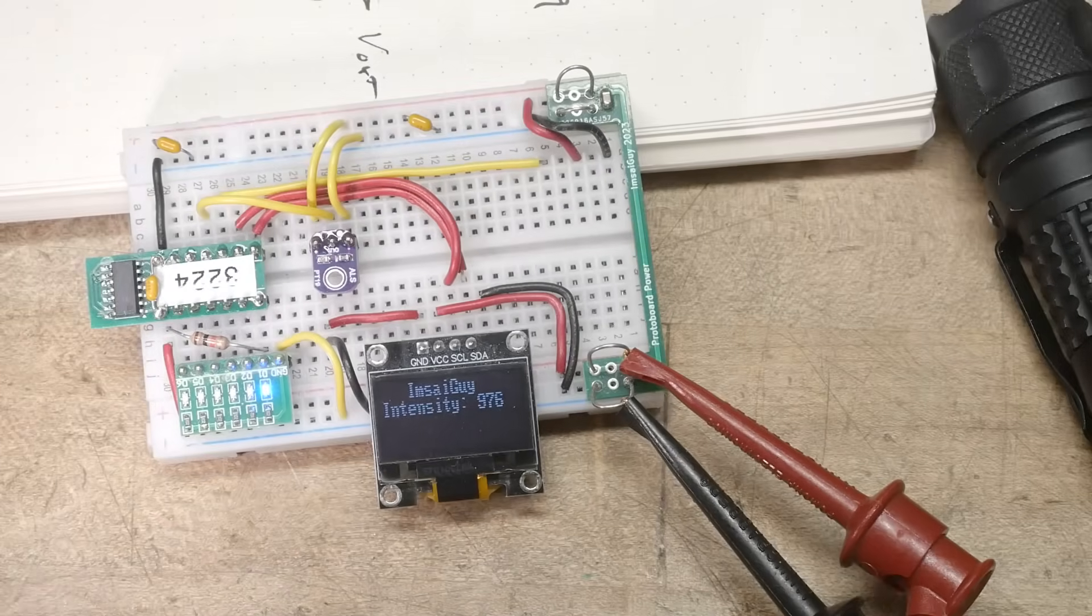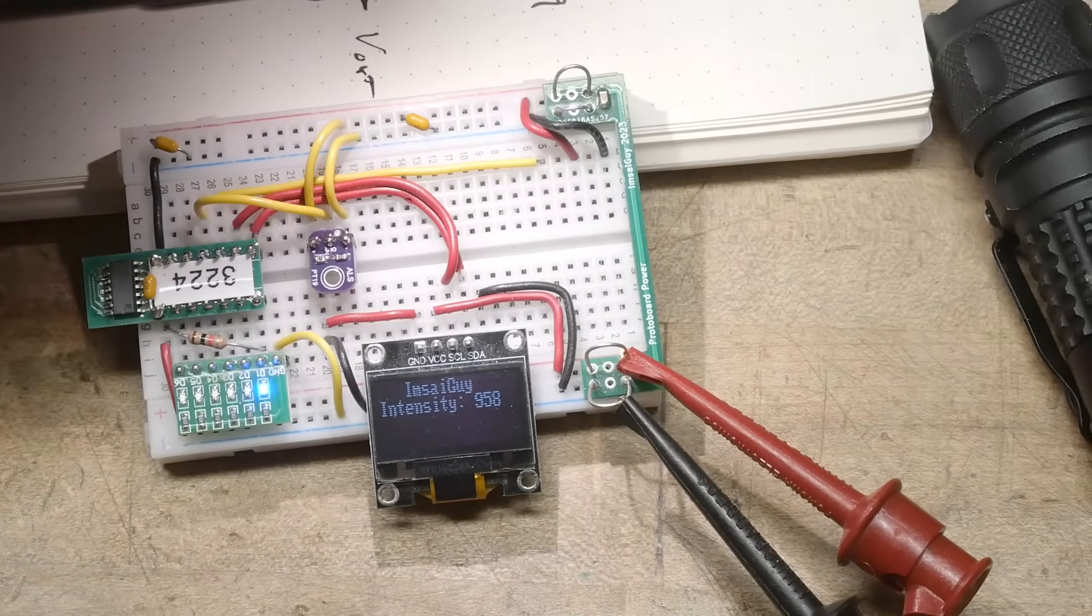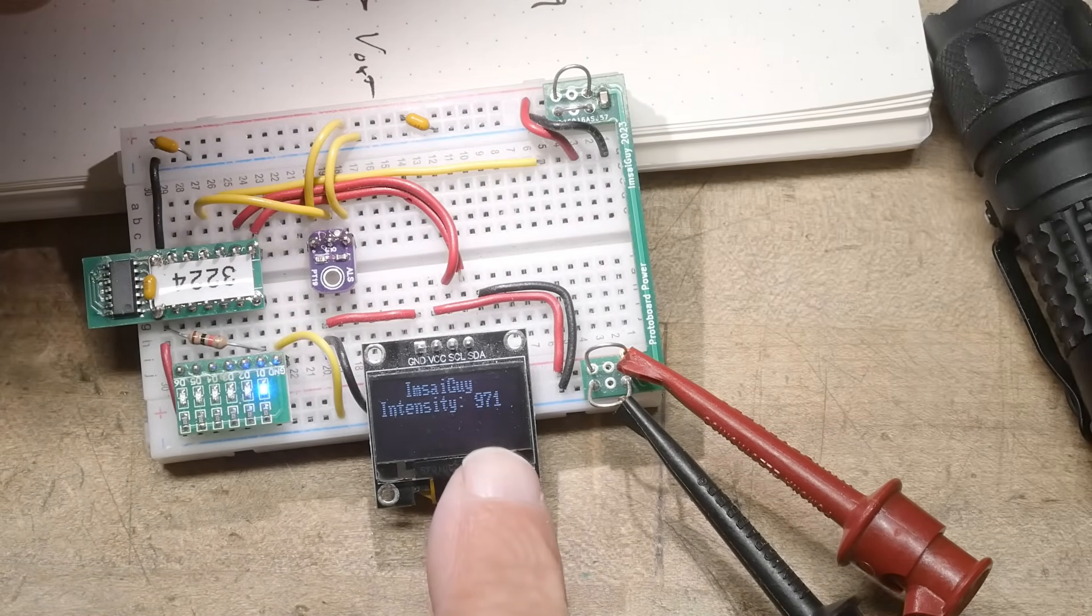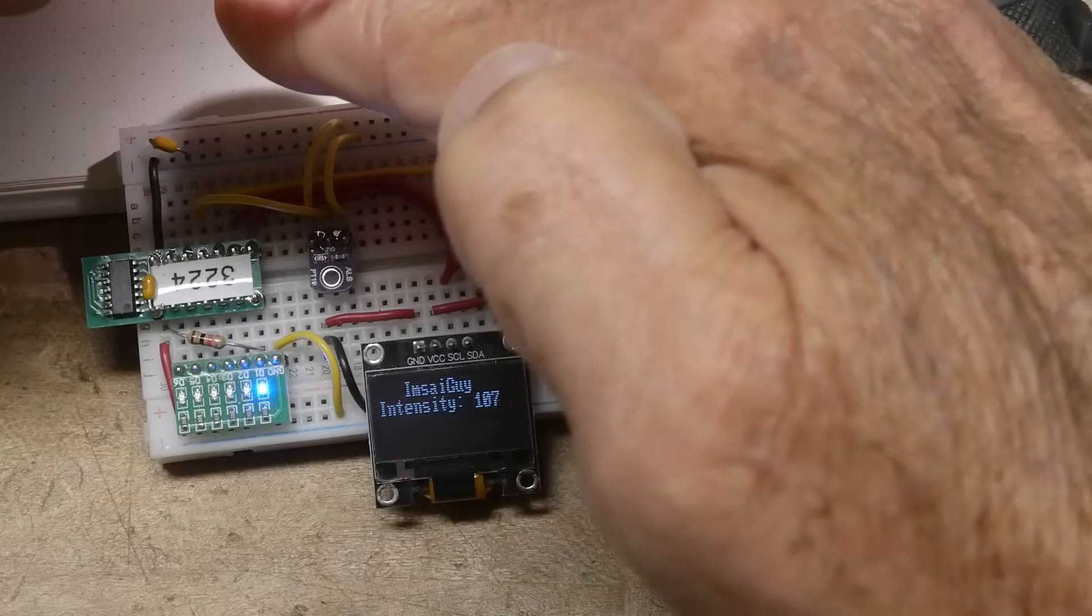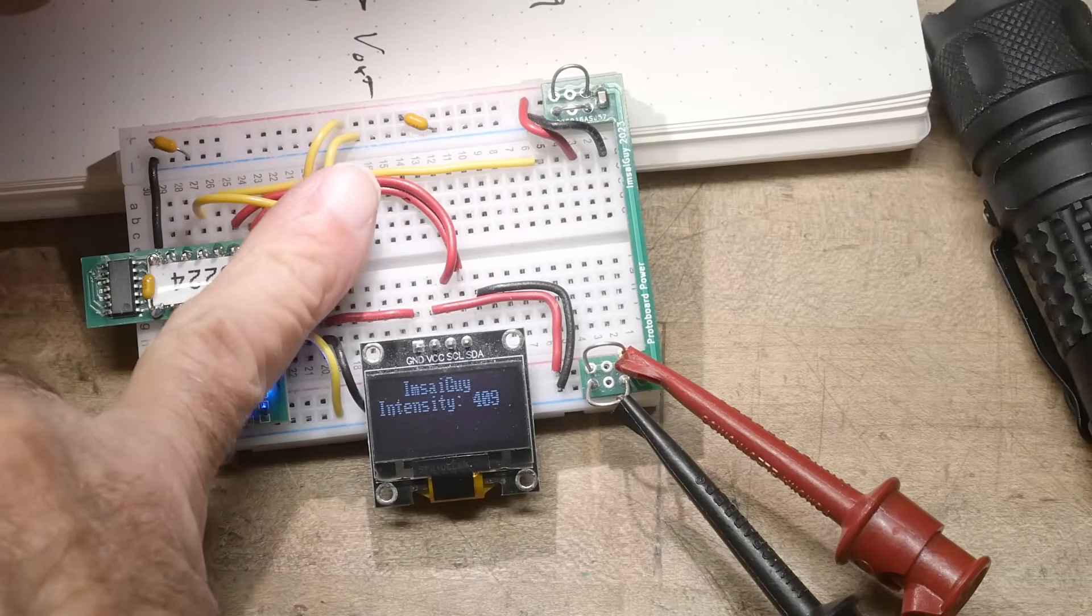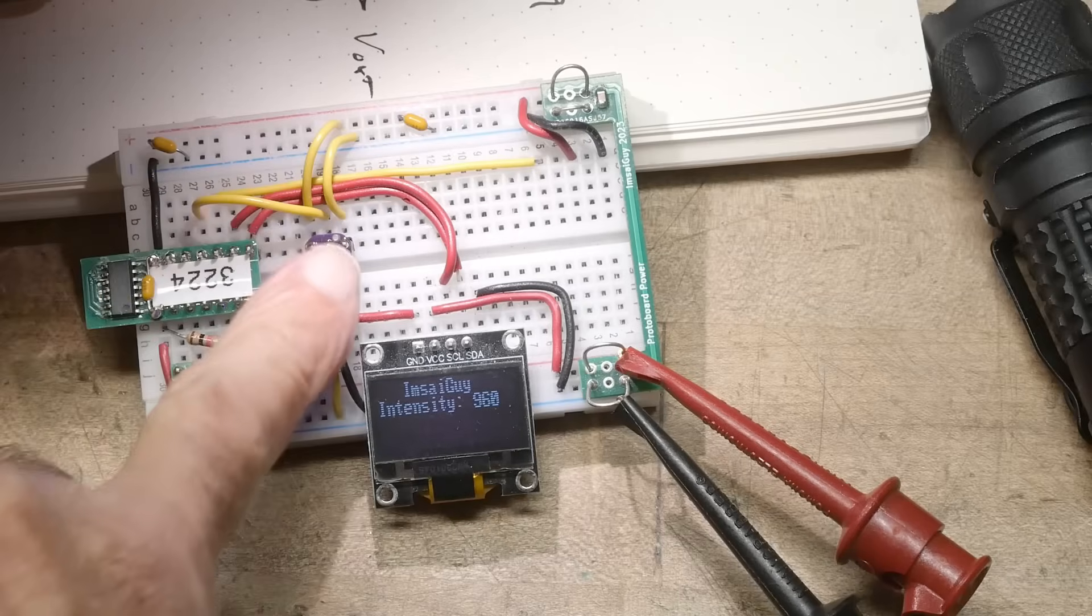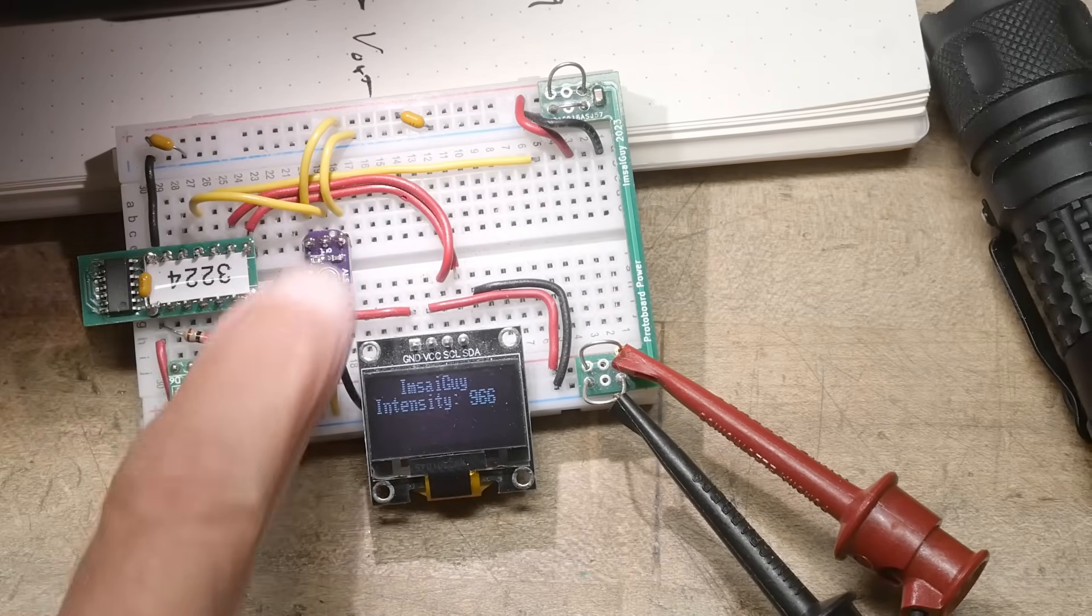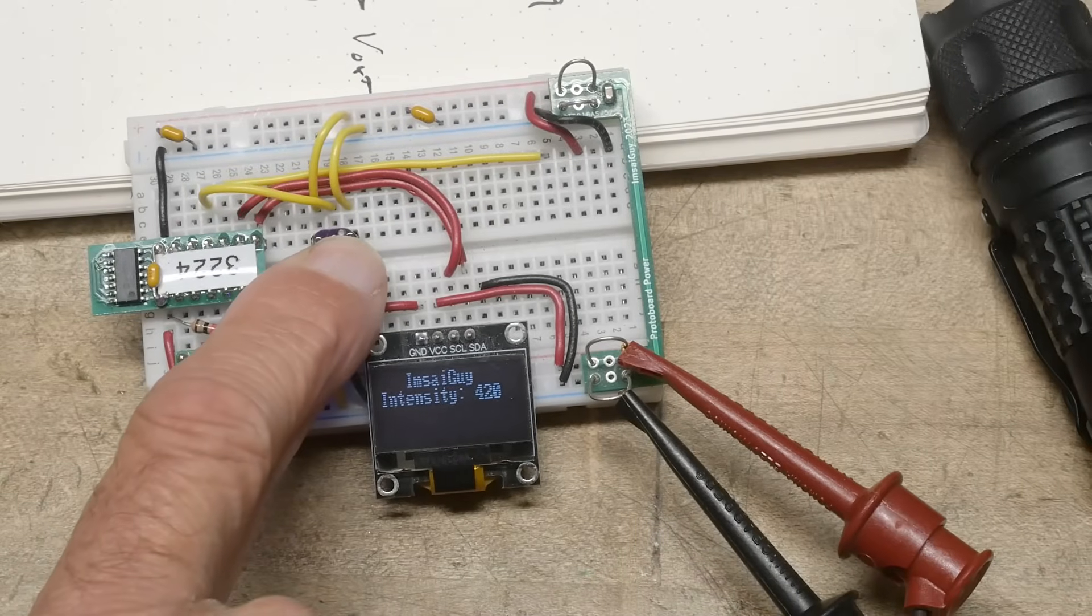I think that's due to the fluorescent light or the LED lights flickering. So let's get out a flashlight from my cell phone here. We'll shine that on here, yeah, it's pretty constant, 970. I'll put my hand in the way, it goes down to a lot smaller number.